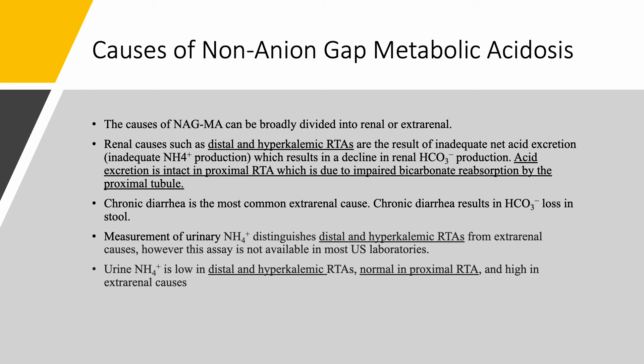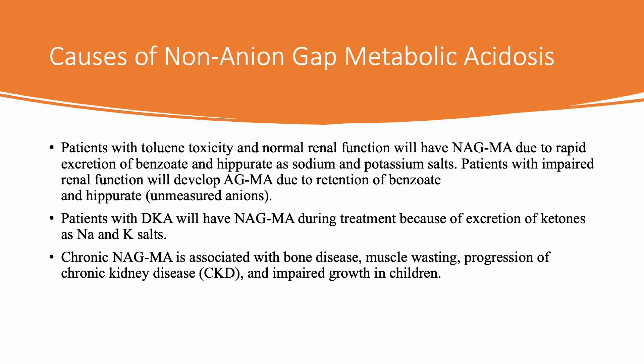Non-anion gap acidosis due to advanced chronic kidney disease has low urine NH4, while it is normal in proximal renal tubular acidosis and can be even high with diarrhea and extra-renal causes. Patients with toluene toxicity initially will have non-anion gap metabolic acidosis because hippurate is quickly excreted along with benzoate as a sodium or potassium salt. But people with impaired kidney function will retain these metabolites — they become unmeasured anions — and you will have anion gap metabolic acidosis.